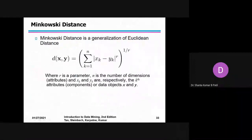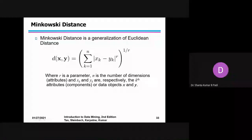When you substitute r equal to 2 in the equation, that concept we can call it as the equivalent distance. So wherever r is there in the equation, substitute it by 2. Now we are substituting r equal to 1 in the case of the equivalent distance. So it becomes xk minus yk squared, whole power 1 divided by 2, which means it is a square root only.